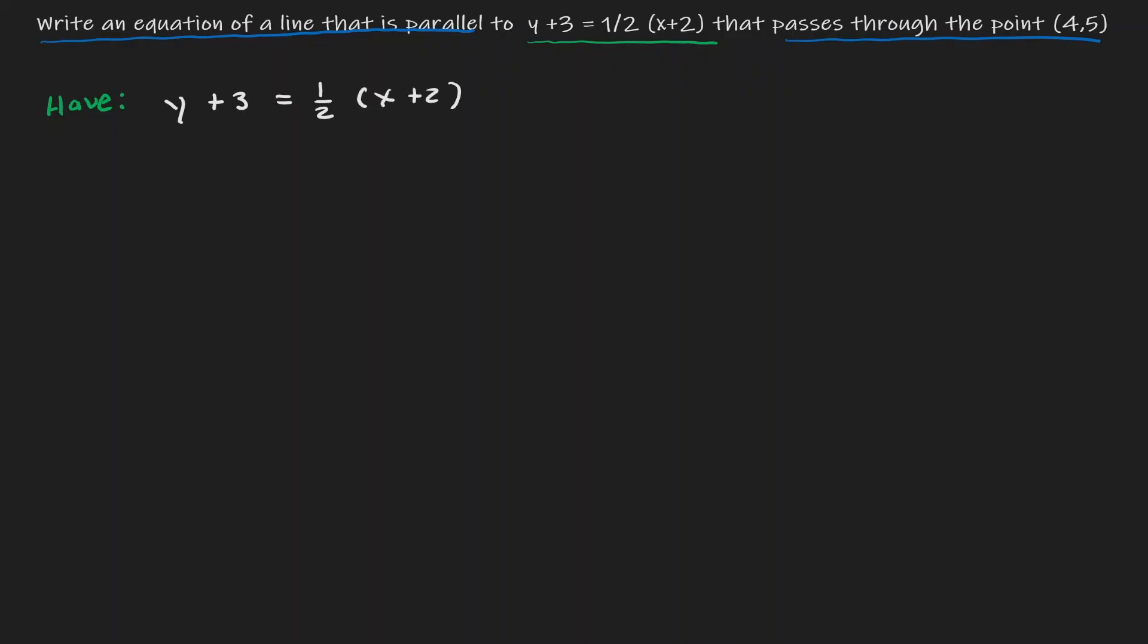So before we move any further, let's solve for y and write this equation in standard form. So here we have y + 3 on the left. Once it gets distributed, we got 1/2 x. Once it gets distributed, then we got 1. Let's take away 3. So here we have our equation in standard form: y = 1/2 x - 2.